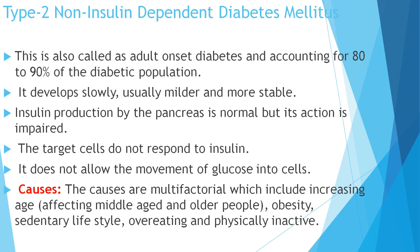Causes for Type 2 diabetes are multifactorial, including increase of age as it affects middle-aged and older people, obesity, sedentary lifestyle, and overeating. When people are physically inactive, they are more prone to non-insulin dependent diabetes mellitus.